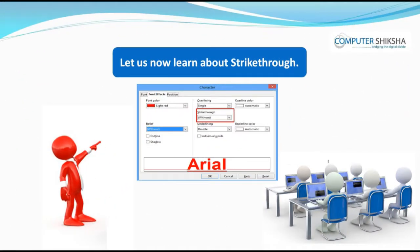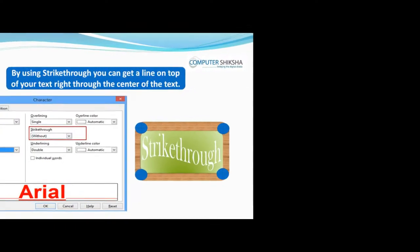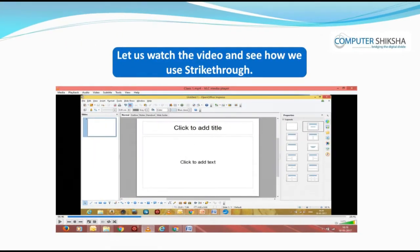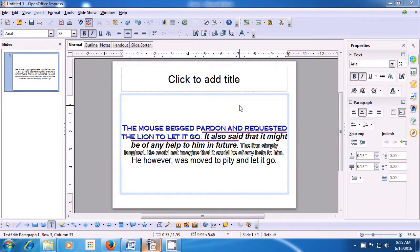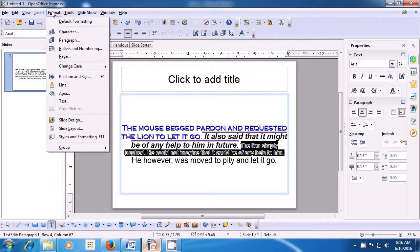Let us now learn about Strikethrough. Do you know why we use Strikethrough? By using Strikethrough, you can get a line right through the center of the text. Let us watch the video and see how we use Strikethrough. Let us now see how to apply Strikethrough on the selected text. Strikethrough means there will be a line in the center of your text. To apply Strikethrough, first select the line, then take your pointer to the Format option of the menu bar, left click on that and then click on the Character option.